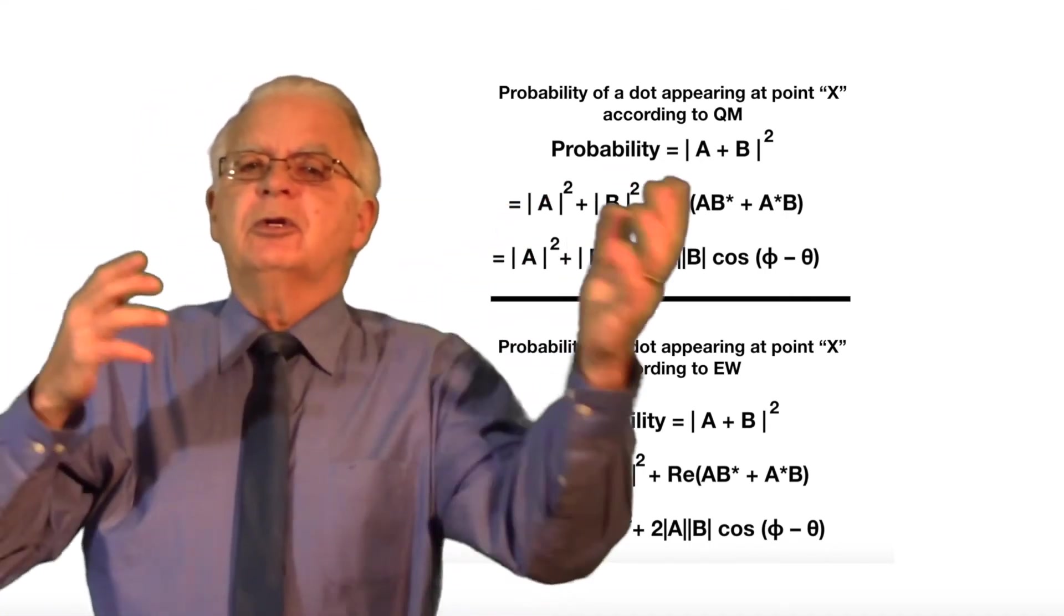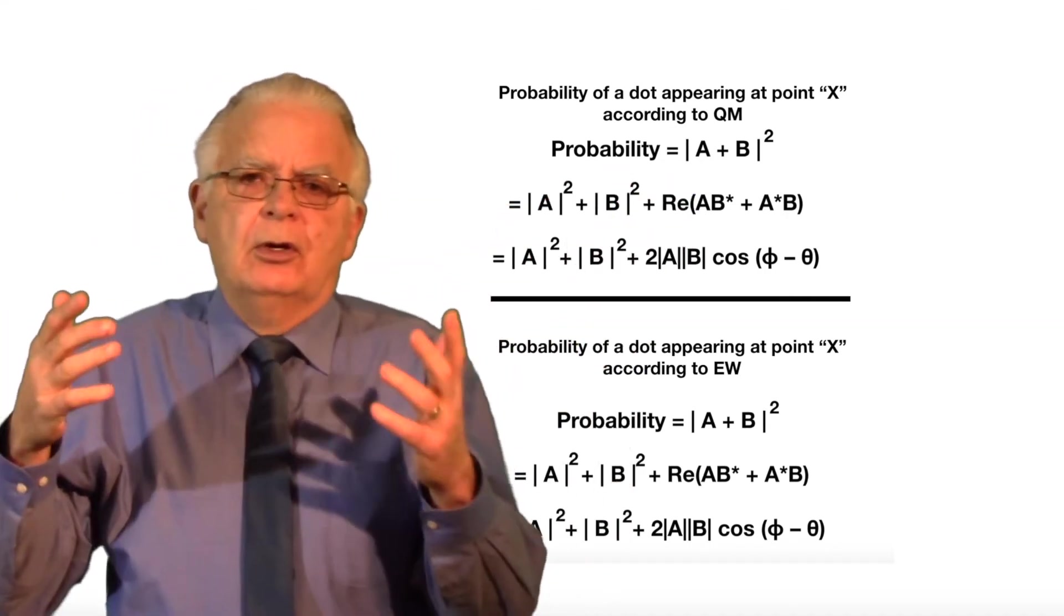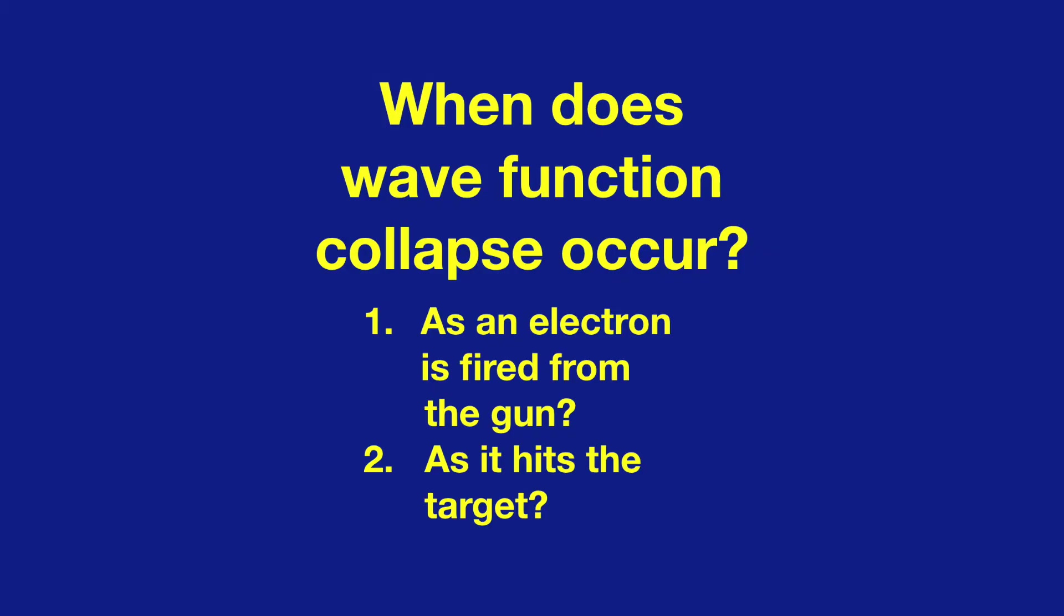Now you might say, if both theories produce the same mathematics, who cares? I mean, it's the mathematics that's so important. But there's a big difference between these two models of the double slit experiment. When does wave function collapse occur?